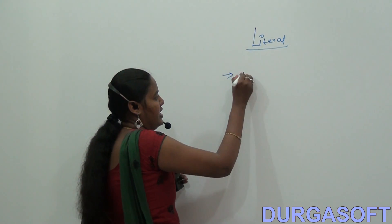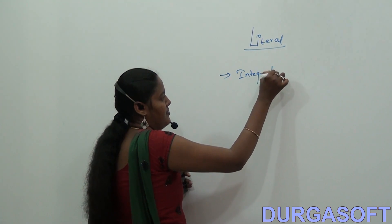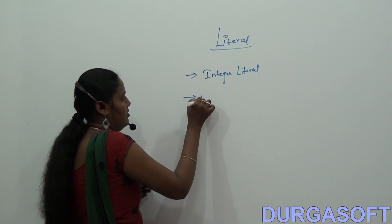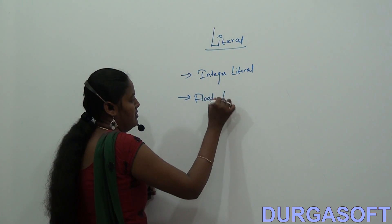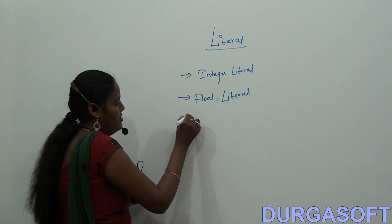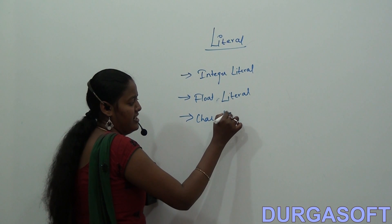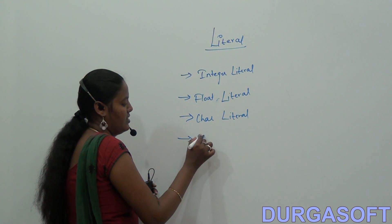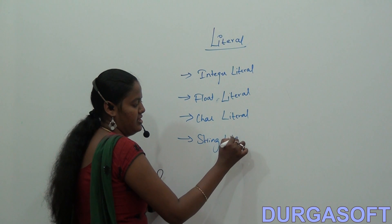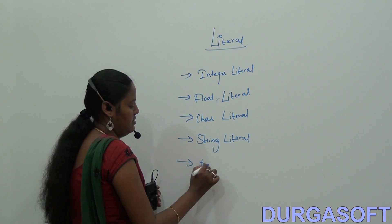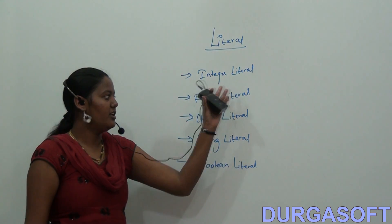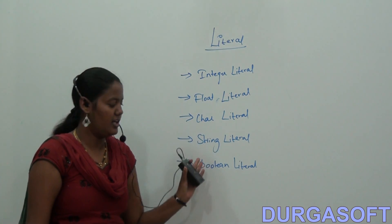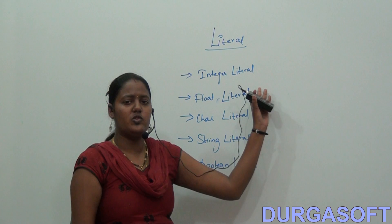Here we have different types of literals. We have five types: integer literal, float literal, char literal, string literal, and Boolean literal.